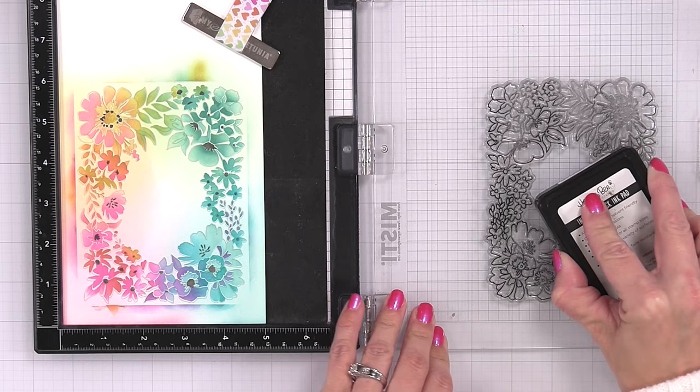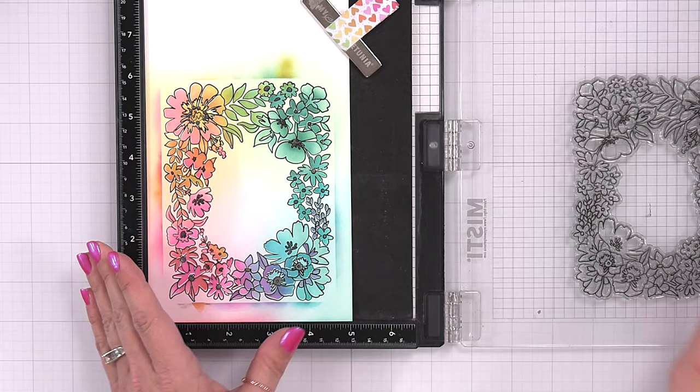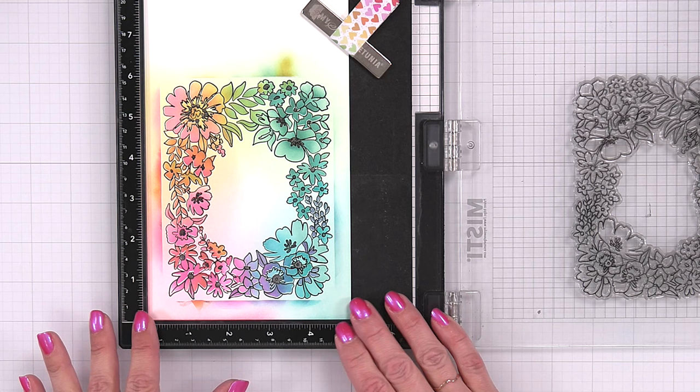I placed my panel back into my Misti stamping tool, and I'm inking up the image in the intense black ink, and I'm going to stamp that down. You're going to see that that black outline ties in really nice with the black centers that I created.